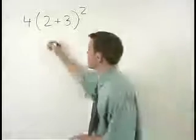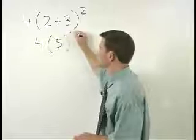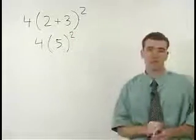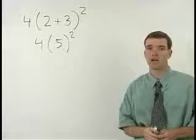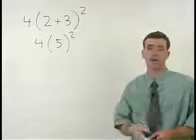So in our next step we have 4 times 5 squared. Remember to do exponents before you multiply. So 5 squared is just 5 times 5, or 25.